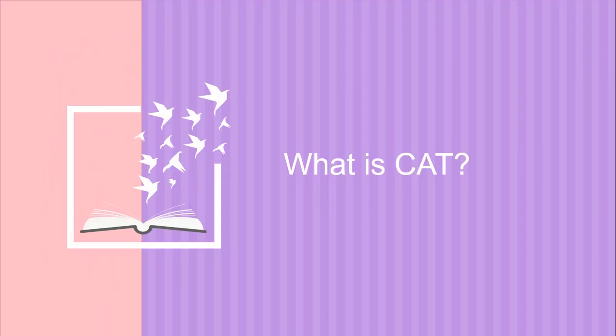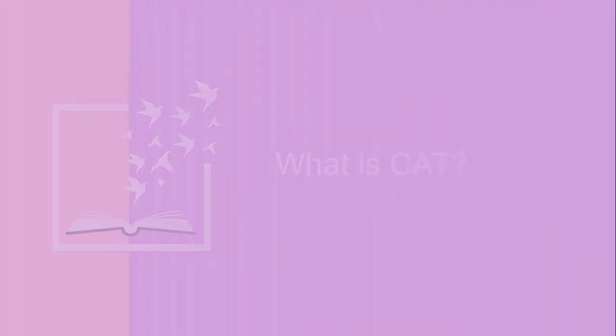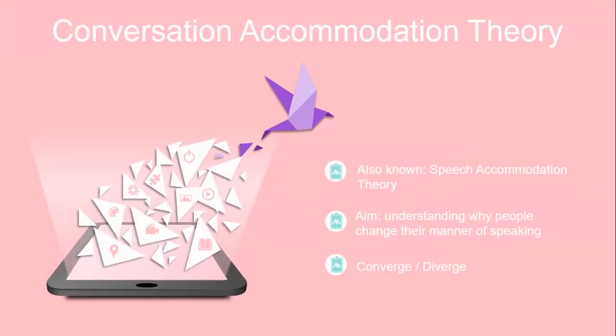So what is CAT, or conversation accommodation theory? A lot of people also call this the SAT, or speech accommodation theory, but I'm just going to say CAT for the rest of this video. CAT aims to understand why people change their manner of speaking when they talk to another person — whether we realize it or not, sometimes we imitate the way people speak, or sometimes we want to make a distinction in how we speak in relation to others in a face-to-face conversation.